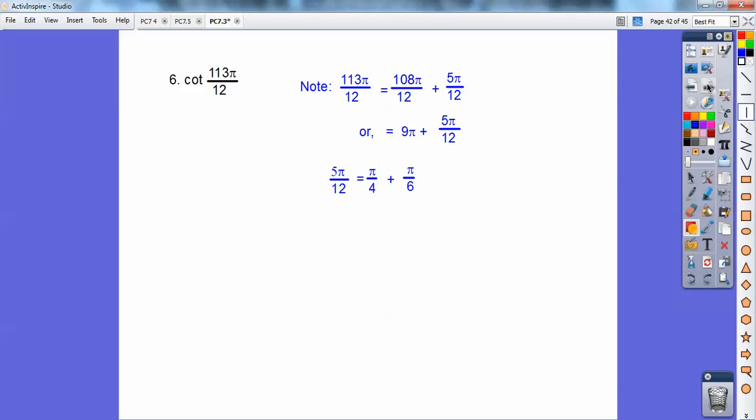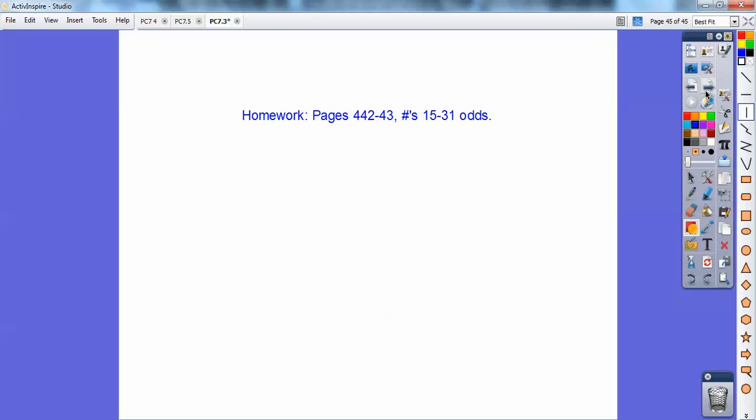And 5 pi over 12 is pi over 4 plus pi over 6, a little bit of fraction skills right there. So since my tangent, I only know my tangent ratios, well the cotangent is the reciprocal of tangent. So I'm just going to reciprocate this right here, so that's going to get me this. And then I'm going to plug in pi over 4 and pi over 6. And when I do that, you crank it out, you should get 2 minus root 3. And that's it.